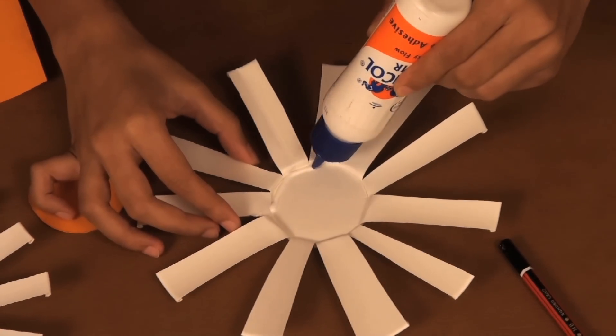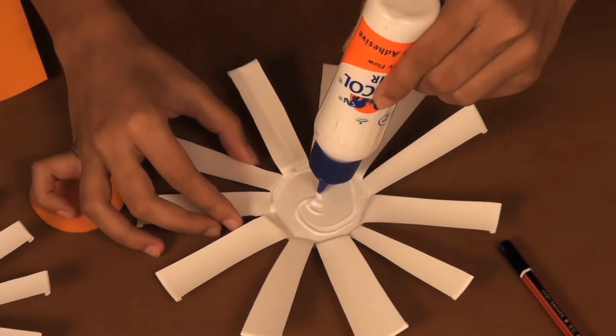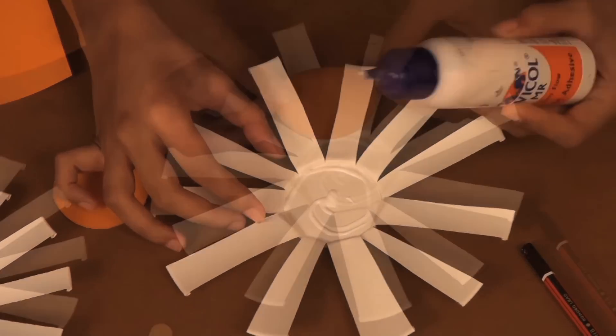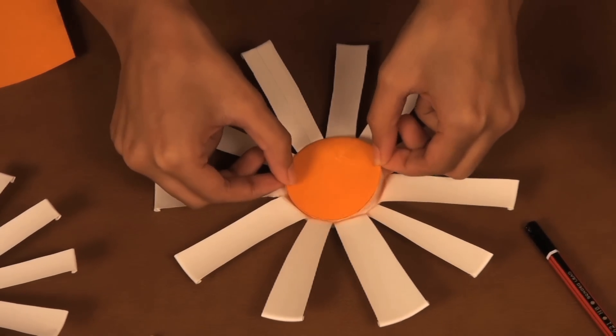Once that's done, apply some glue in the center like this and paste the orange cutout at the center of the flower. Press down firmly.